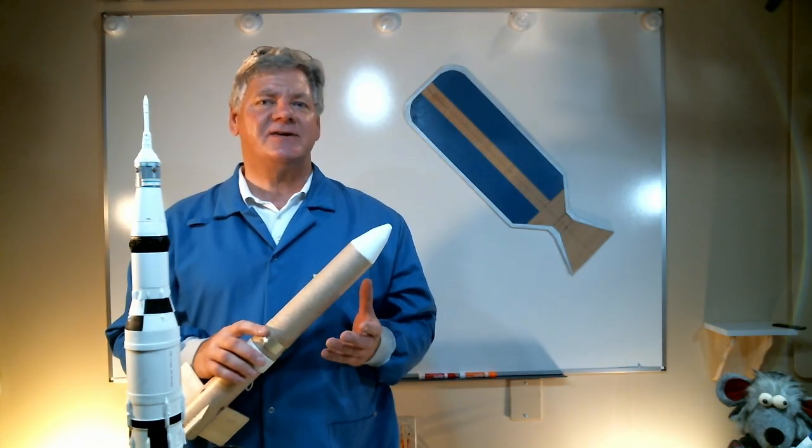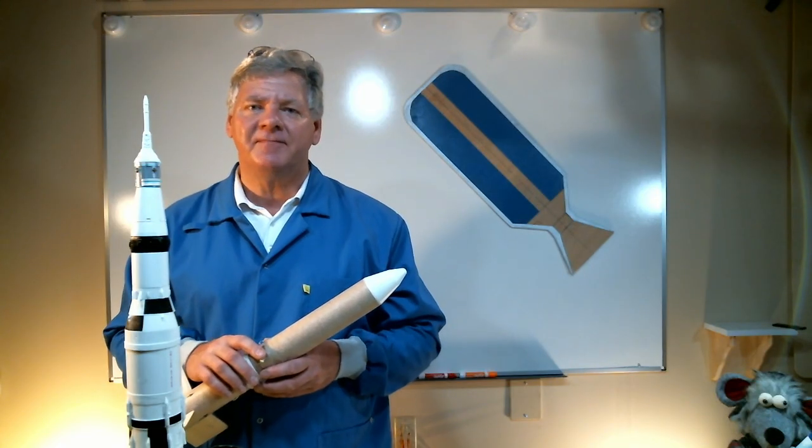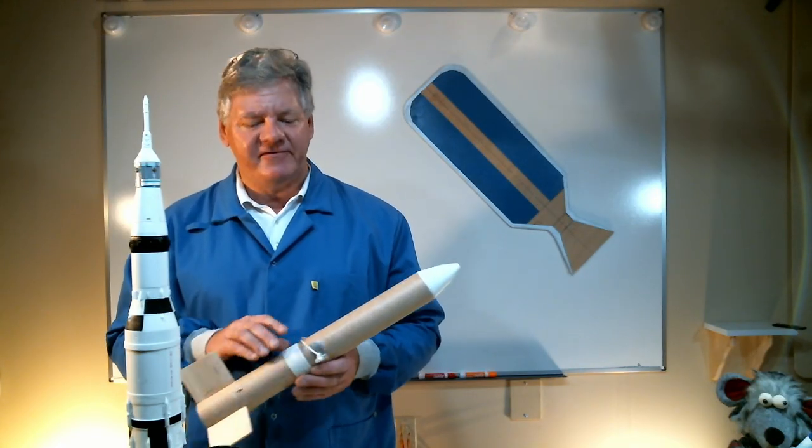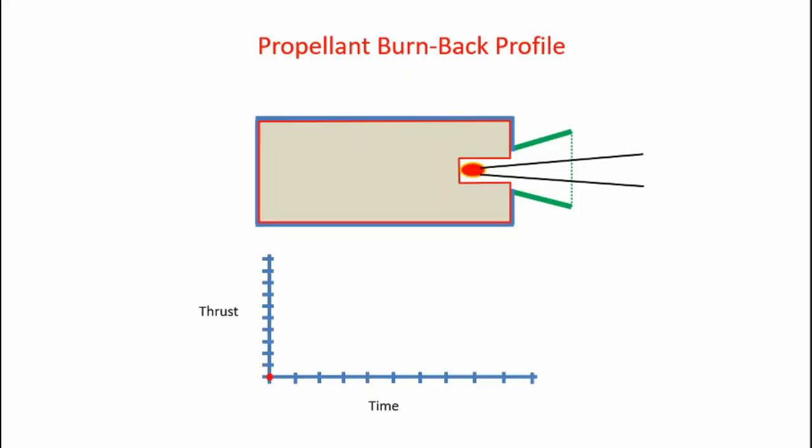Well, that's the high-level basics of rocket motor thrust production. Now there's one more facet that I want to talk about, and that's the thrust curve. The thrust curve is a time-varying thrust level produced by the rocket motor. Now that information is critical to be able to predict the flight performance of a rocket. So now let's take a look at what's happening inside the rocket motor as propellant burns.